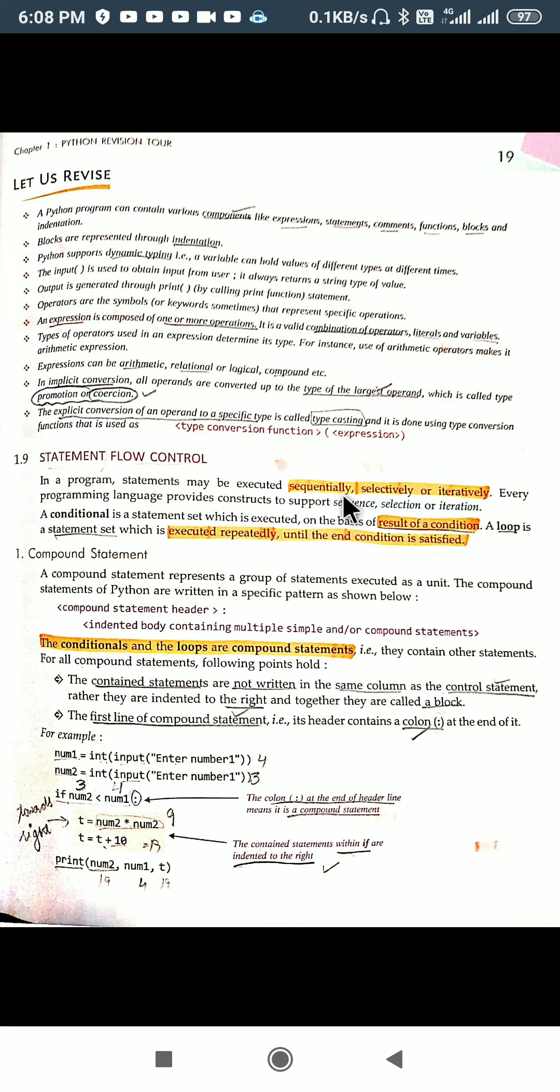Whenever we are executing a program, our group of statements are being executed in a particular manner based on the condition, whether it is true or false, or based on the loop condition that you have given.